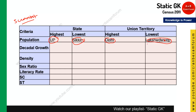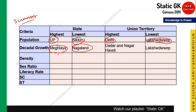Coming to decadal growth rate — which state has grown the most from the previous census — Meghalaya has the highest decadal growth rate. Nagaland has the lowest decadal growth rate among all states. For union territories, Dadra and Nagar Haveli has the highest growth rate, while Lakshadweep has the lowest decadal growth rate.